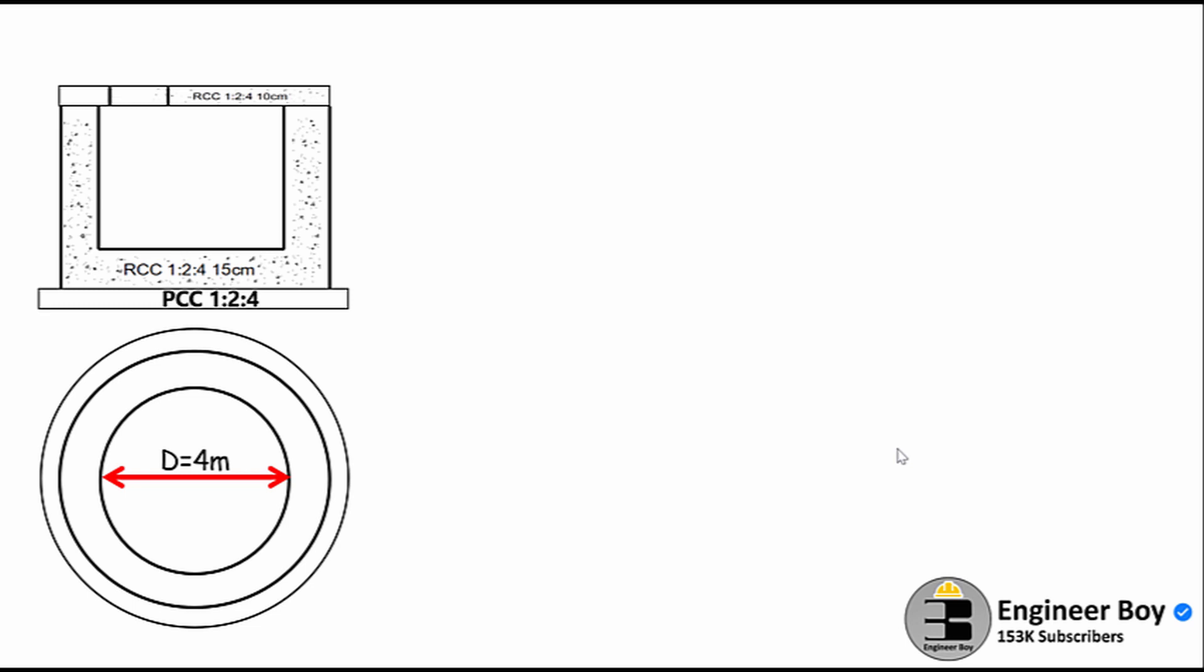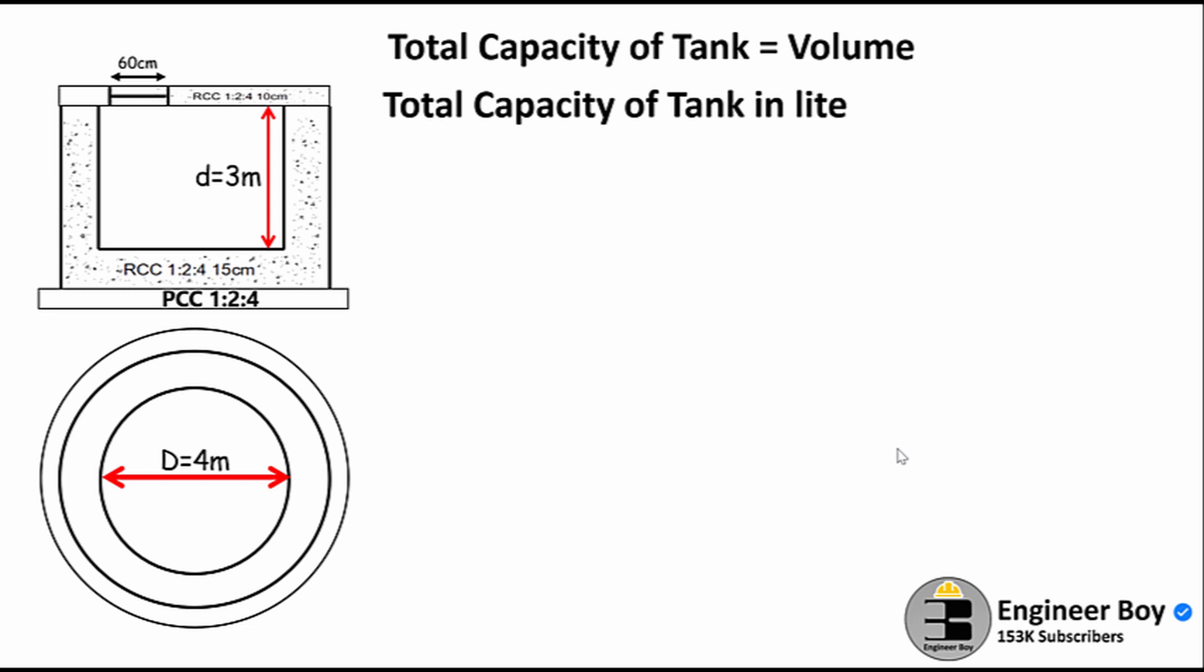Now let's say we are asked to work out the capacity of the same water tank. Remember, the capacity of the tank can be calculated in terms of volume, and if you multiply the volume by 1000, you can get the capacity of the tank in liters if the volume is in cubic meters.